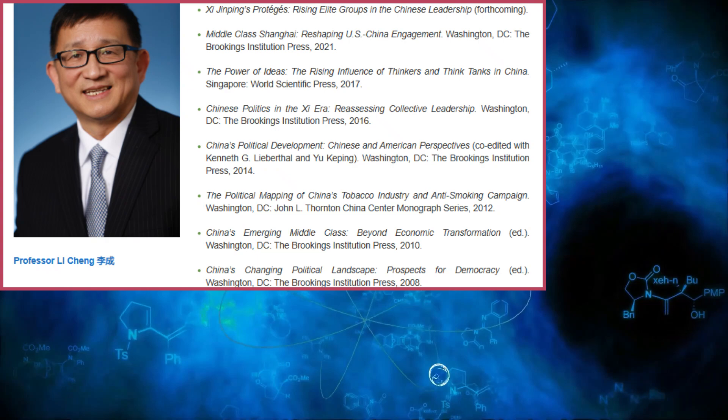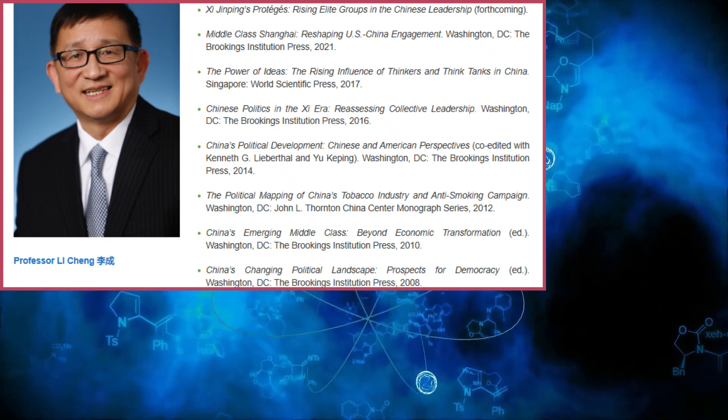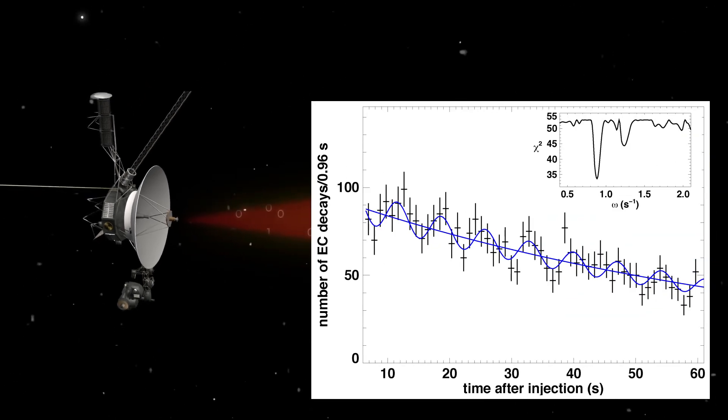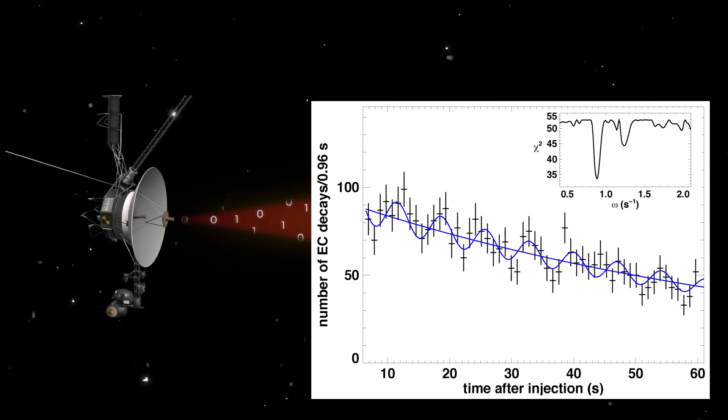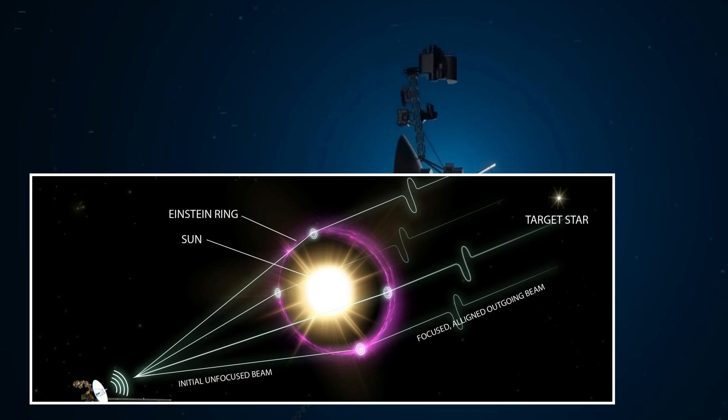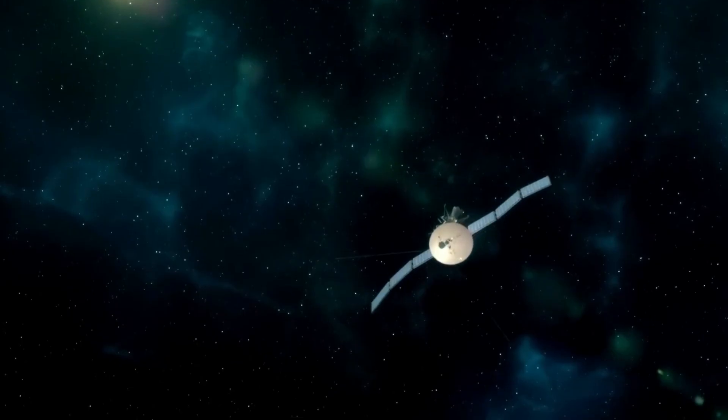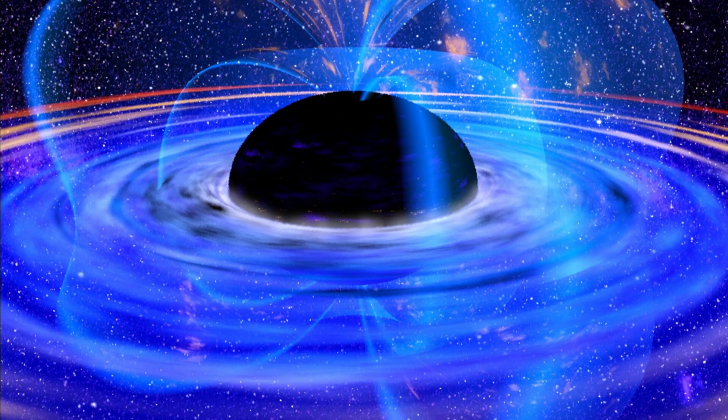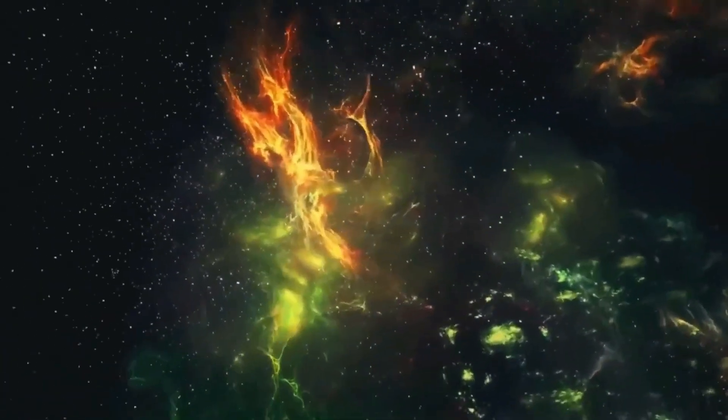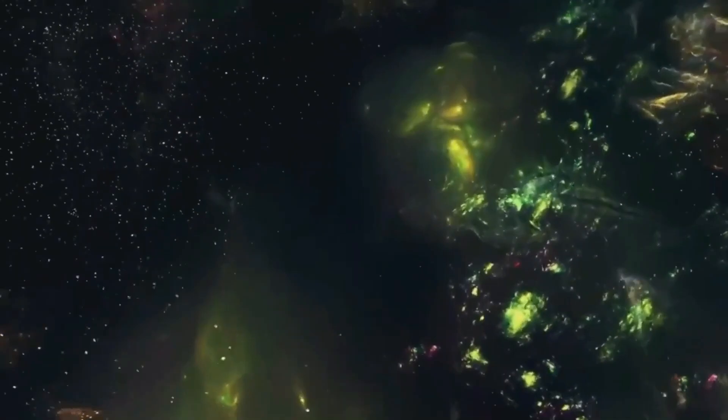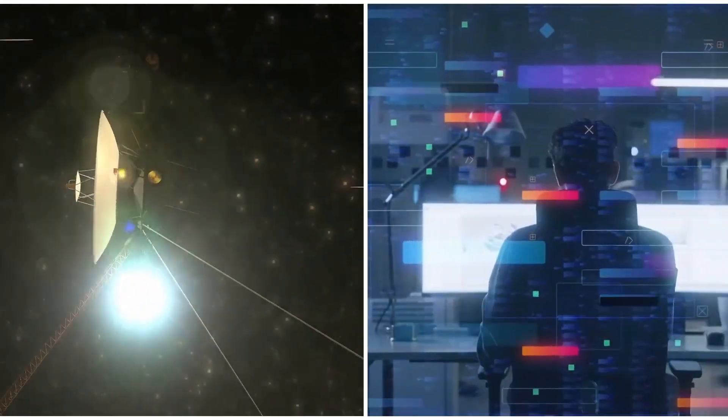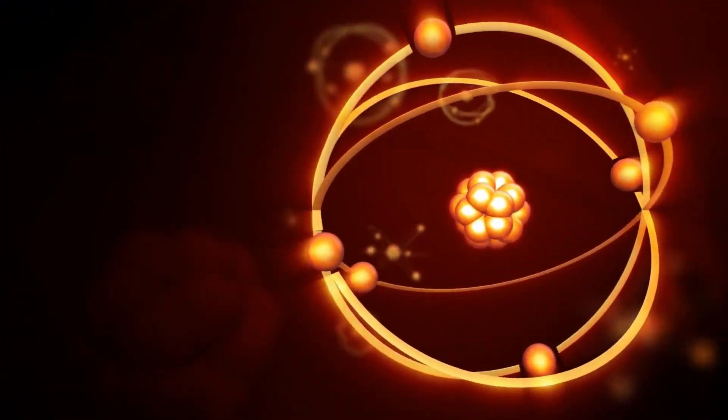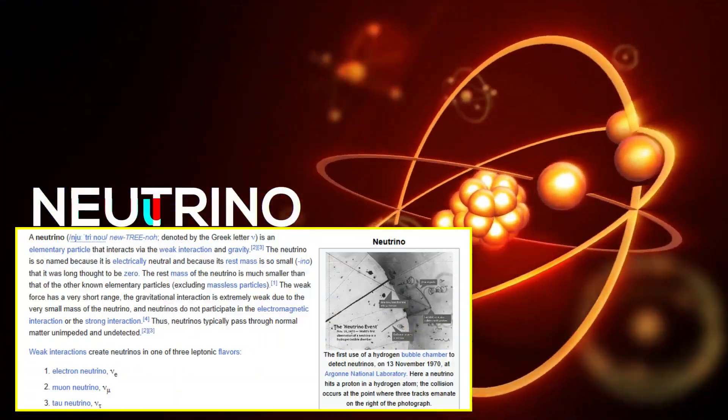But its mission didn't end there. By 1990, it had traveled so far that it took the legendary pale blue dot photo, an image of Earth as nothing more than a tiny speck in the vastness of space. Then in 2012, Voyager 1 made history again. It became the first human-made object to cross into interstellar space, leaving the protective bubble of the sun's influence and entering the great unknown. Scientists expected its instruments to eventually go silent, with power levels dropping year by year. But against all odds, Voyager 1 kept transmitting data. Until now.